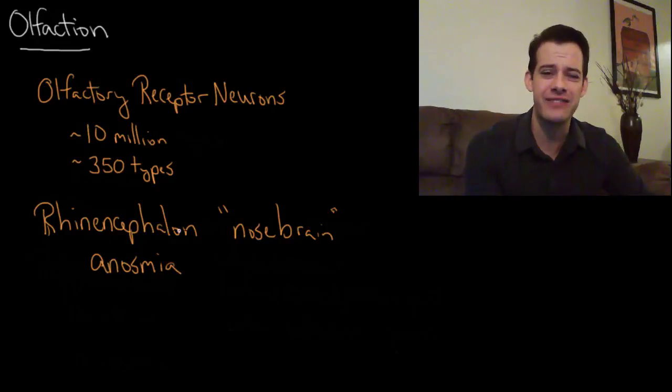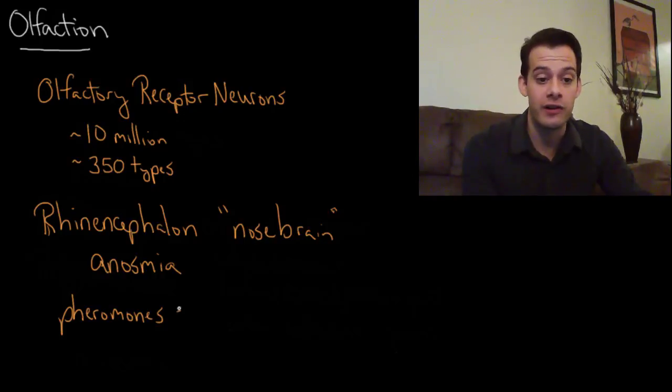Now other animals have an additional olfactory system and this is called an auxiliary olfactory system and this allows them to detect pheromones. So what are pheromones? Pheromones are chemical messengers that are sent between members of a species.